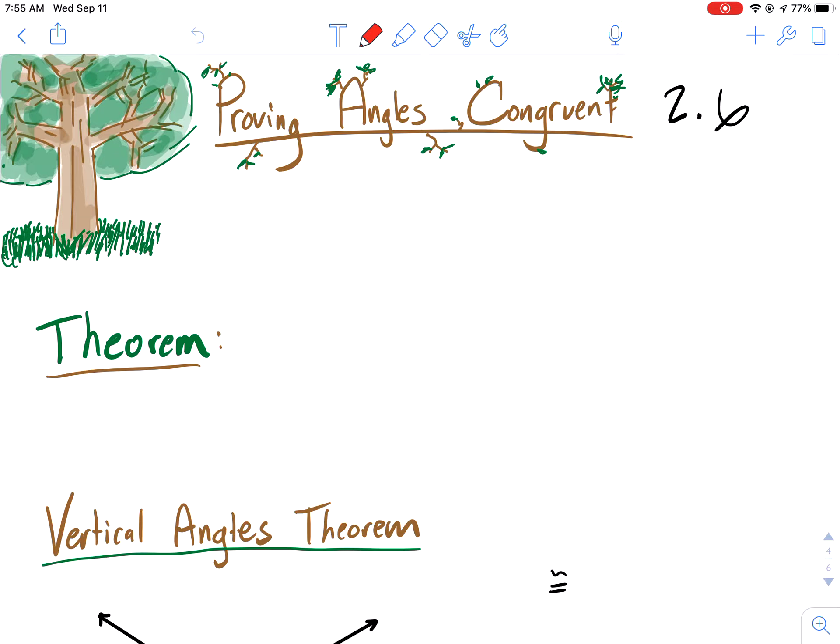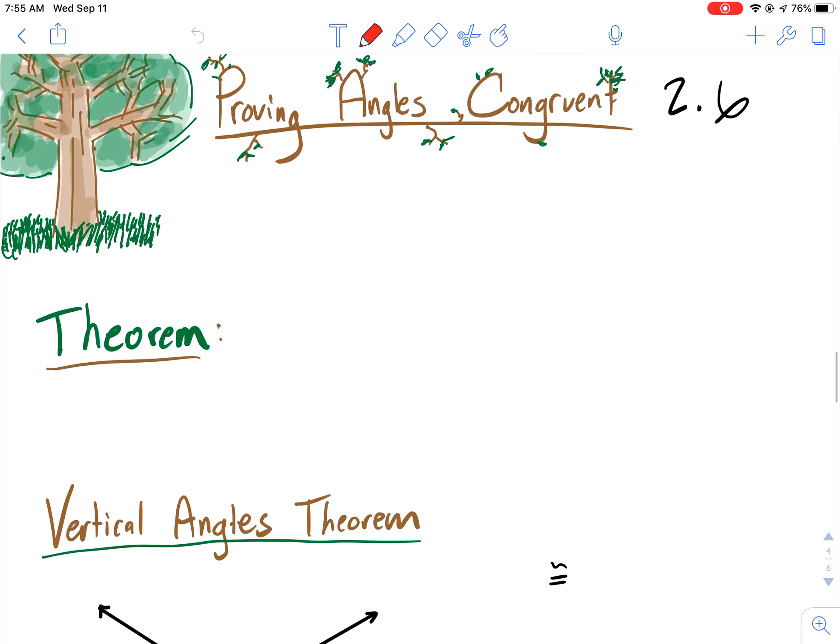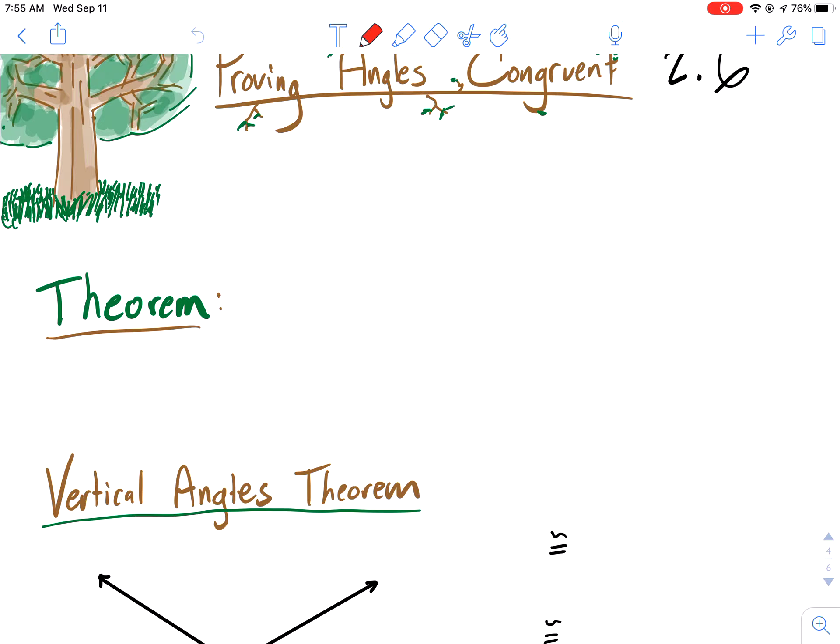And there's just a couple theorems we need to understand before we kind of have a good understanding of what's expected with proving angles congruent. So first off, we have a theorem. A theorem is a conjecture you prove to be true.